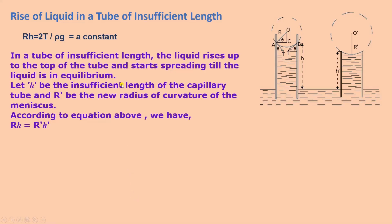When the tube is of insufficient length — if the tube height h' is less than h — the liquid rises to the top of the tube and starts spreading until equilibrium, but it will not spill. Let h' be the insufficient length of the capillary tube and R' be the new radius of curvature of the meniscus. Then R'h' = Rh = constant. So the smaller the length of the tube, the greater will be the radius of curvature of the meniscus, but the liquid will never overflow.